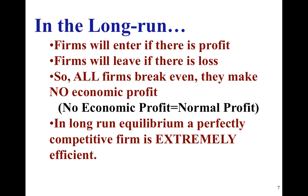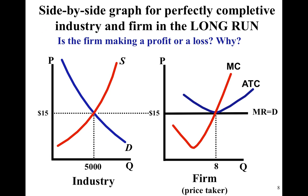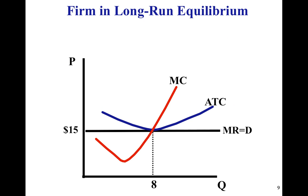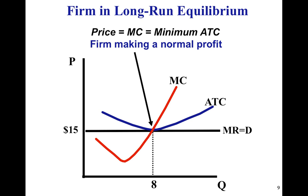We'll also talk about why perfect competition in the long run is extremely efficient, and why Adam Smith was excited about it. Here's our long-run equilibrium graph. You can see this firm is not making a profit or a loss, because at the profit-maximizing quantity of eight, the firm is making fifteen dollars a unit and each unit is also costing the firm fifteen dollars in economic costs, so the firm is breaking even.